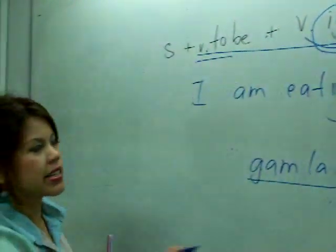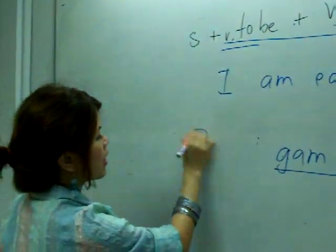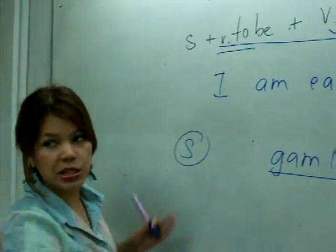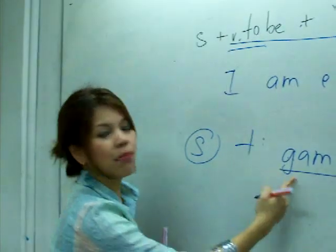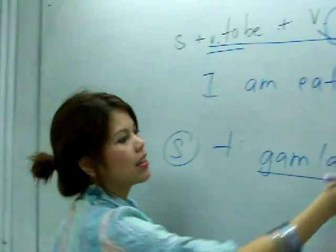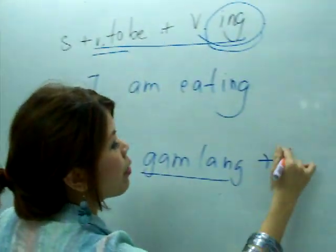So the structure in Thai is: subject, กำลัง (kam lang), and verb. This pattern is the same as the English present continuous.